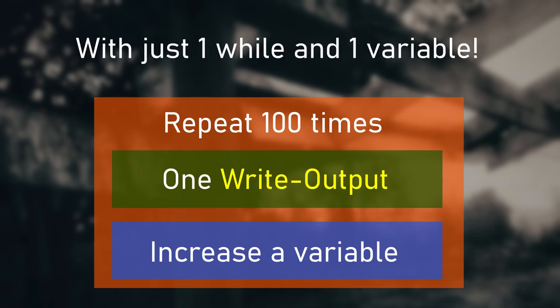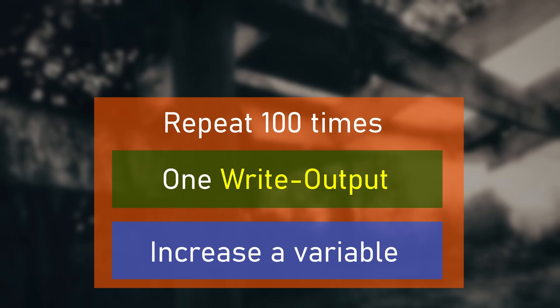A much better way would be to just have one line of code to do the printing and then repeat that line exactly 100 times, changing some variable each time to go up. That's the best way to do this, and you can do that with just one while loop and one variable. There are actually a few ways you could pull off counting like this.